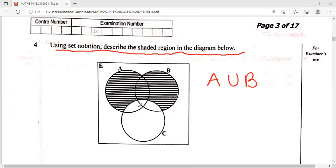Therefore, we are going to say A union B, intersection C complement. So this is the answer that we needed to write in order to get full marks.